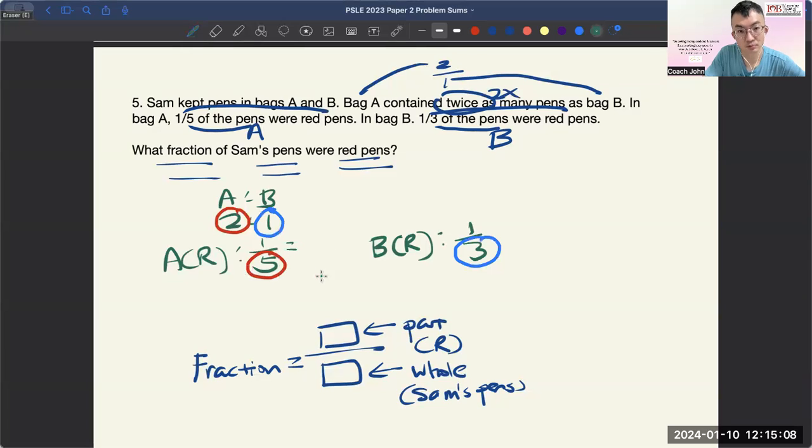Then we times 2 on this side to make it 2 is to 1. So, what is the lowest common multiple of 5 and 3? It will be 15. So, we have 3 over 15, and then this one will have 5 over 15. So now if I can form a ratio, it's 1 is to 1, but it's not the case. It should be 2 is to 1.